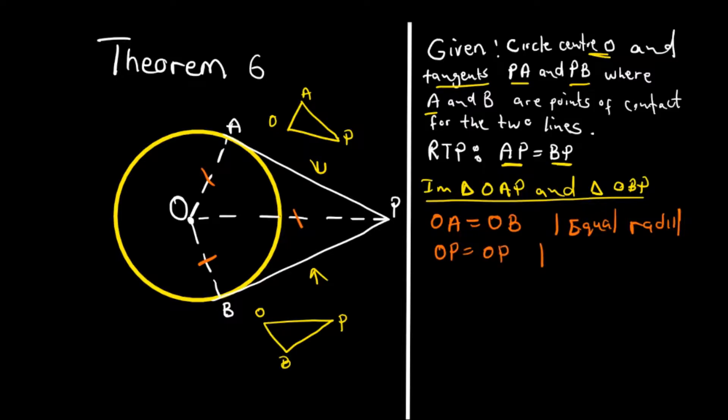And then we know that OP equals OP, so it's a common side. Once you've proven that, we can confirm that this angle here is equal to that angle here, which equals 90 degrees. Therefore, we say angle OBP equals angle OAP equals 90 degrees. The reason for that is the tangent is perpendicular to the radius.